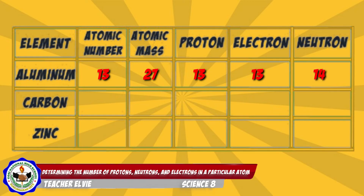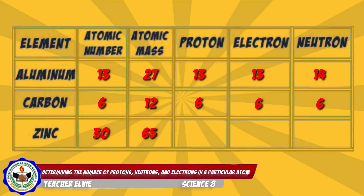For Carbon: the atomic number is 6, atomic mass is 12, number of protons is 6, number of electrons is 6, and number of neutrons is 6. And for Zinc: atomic number is 30, atomic mass is 65, number of protons is 30, number of electrons is 30, and number of neutrons is 35.